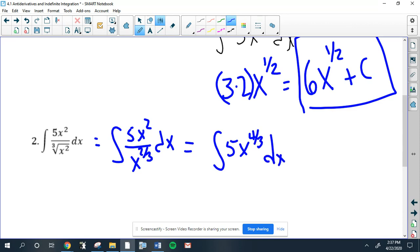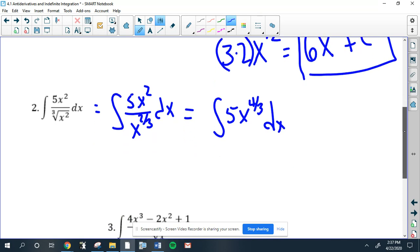Now the x is on top, now we can integrate. So you add one to 4/3, that's 7/3. Multiply by the reciprocal of 7/3, which is 3/7. Three sevenths times five is 15/7. We're done, plus C. That's it.